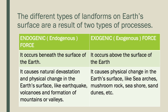The different types of landforms on Earth's surface are a result of two types of processes. The first is called endogenic or endogenous force. The second is called exogenic or exogenous force.